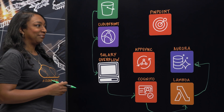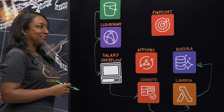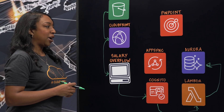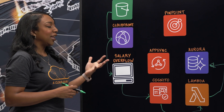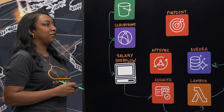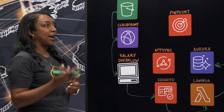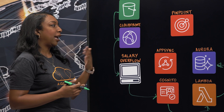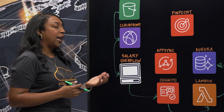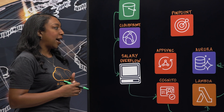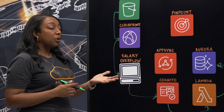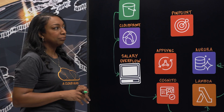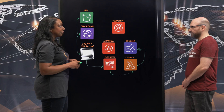So I see that you're using Aurora here. Why did you choose Aurora? When I started thinking about the design for this system, I had two options: DynamoDB, NoSQL, and Aurora. I decided to use Aurora because my data is relational.